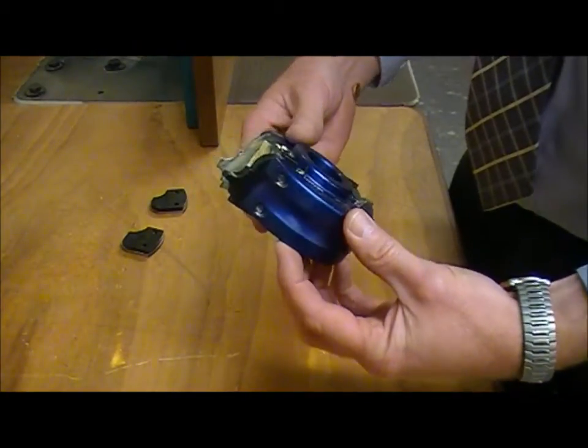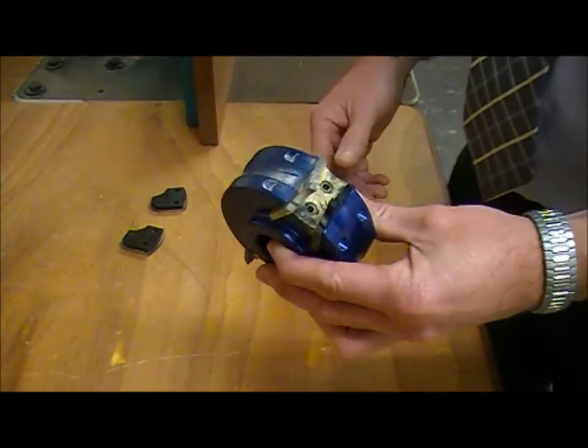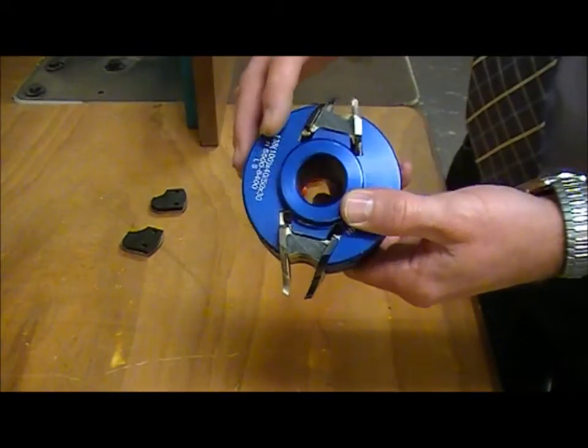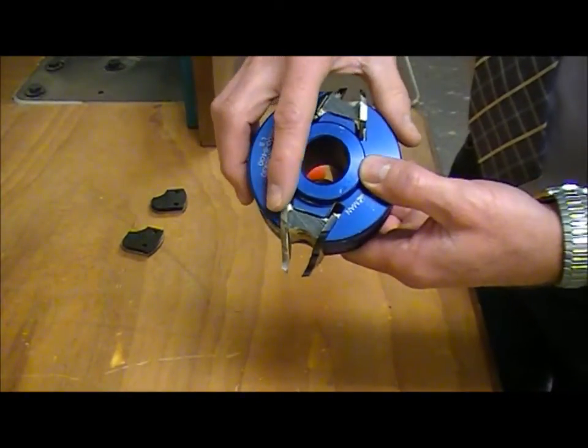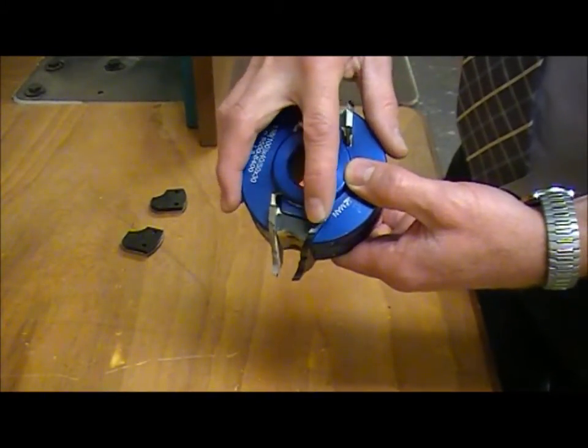Here we see an aluminum euro block and we're going to change the cutters in this and the limiters. Here we can see the cutter, the wedge block, and the limiter.